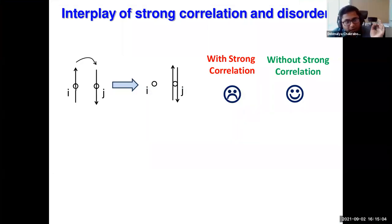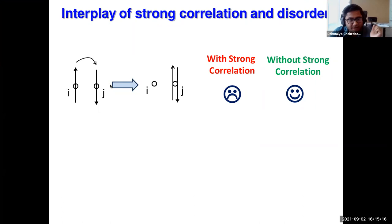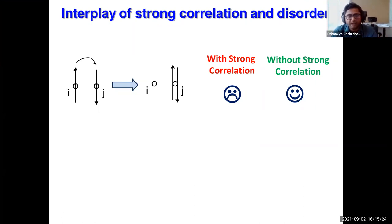If this up-spin goes from i to j site, it forms a double occupancy at the j site. If we don't have any strong interaction, this is a happy hopping because it wants to hop around and lower the energy. If the interaction between the two electrons is very strong, the two electrons don't want to come together — they repel each other — then this hopping is prohibited.